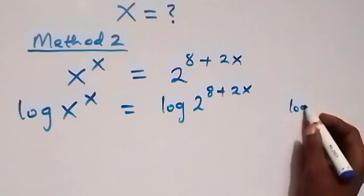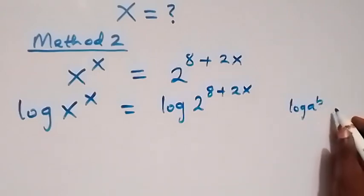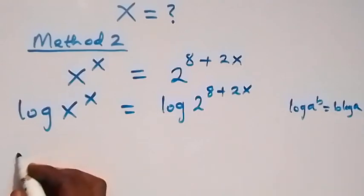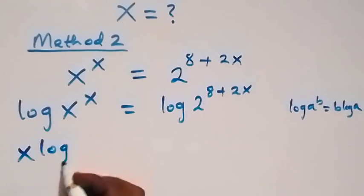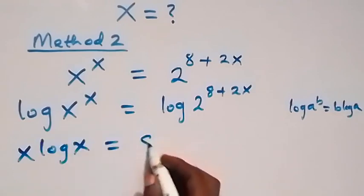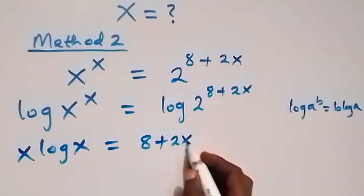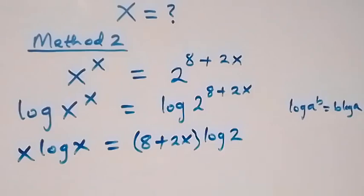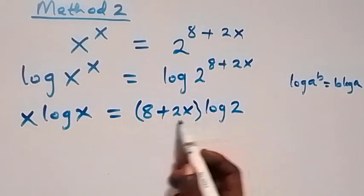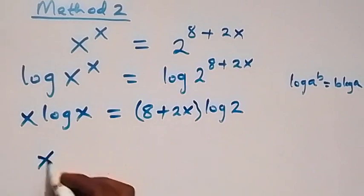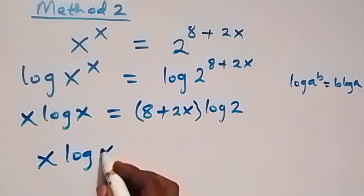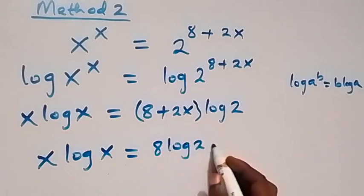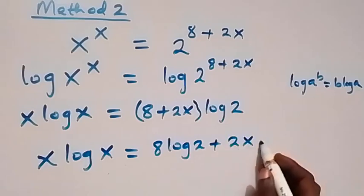That is, when we have log a to power b, this is the same as b log a. Applying this here, this becomes x log x equals to, with 8 plus 2x as the power, then log 2. In the next step we use log 2 to open this bracket and this becomes x log x equals to 8 log 2 plus 2x log 2.